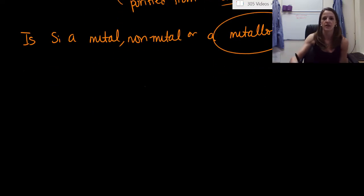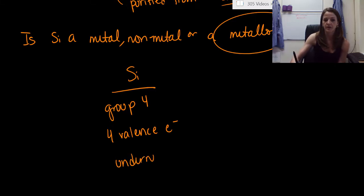So let's get down some properties of silicon here. So silicon is in group four, which means it has four valence electrons.